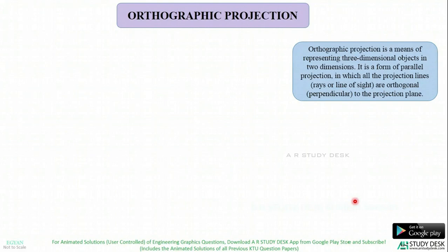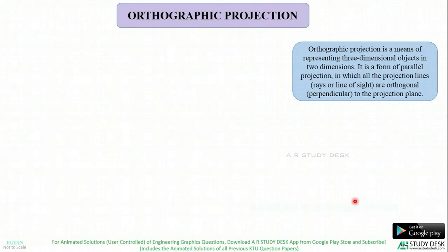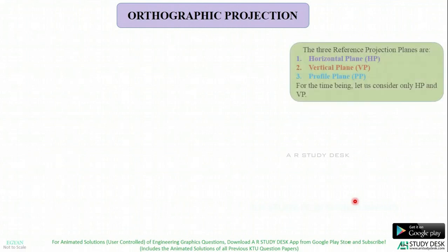So if you want to locate something in space, you need some reference. For example, a point (2, 3) in a graph sheet means that on the x-axis you take 2 units and on the y-axis you take 3 units. Similarly, in engineering graphics, particularly in orthographic projection, we have 3 types of planes.